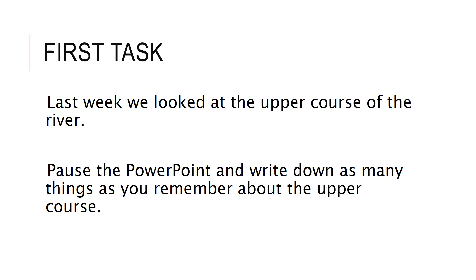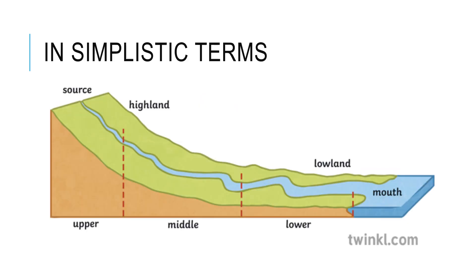Welcome back. Hopefully you got as many facts and details down about the course as possible — don't panic if you couldn't remember. So last week we were looking at the upper course. We find the source of the river there, a small river. It erodes vertically but not laterally — it's too small and young to do that, it hasn't got the power to shift the land either side of it. We also find a quite steep gradient in the upper course.